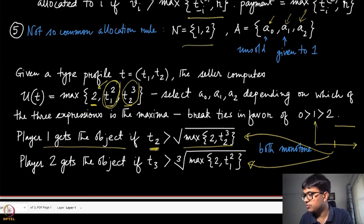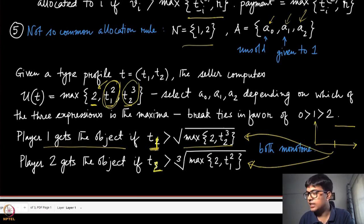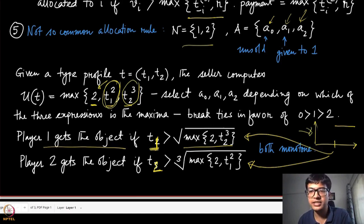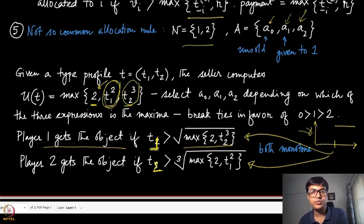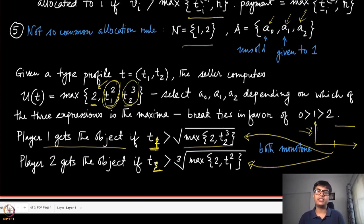The allocation rule for both players is a monotone allocation rule, and therefore we can equivalently compute the corresponding payments using Myerson's formula and make this mechanism dominant strategy incentive compatible.